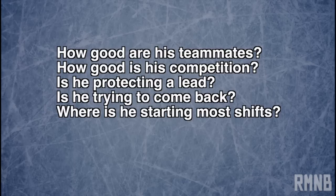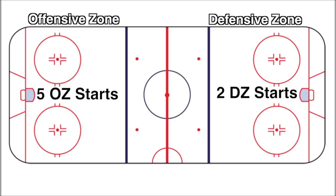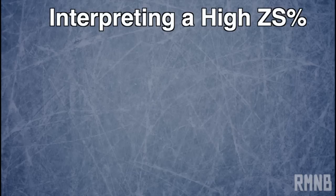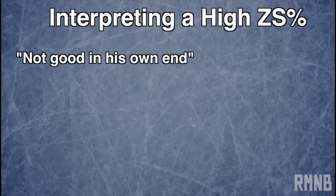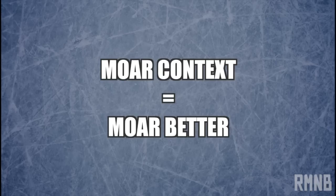How good are his teammates? How good are his opponents? Is he trying to protect the lead? Is he trying to come back? And where is he starting all of his shifts? When we start to answer those questions, we start to understand the context that informs the possession numbers. In that game we were talking about before, let's say that Matt started five shifts in the offensive zone and just two in the defensive zone. That gives him a 71.4% offensive zone start percentage — sometimes you'll just see that as ZS percentage. A player who starts most of his shifts in the offensive zone, closer to the opponent's net, is more likely to be on the ice for shot attempts in his team's favor and therefore more likely to have a good possession score.